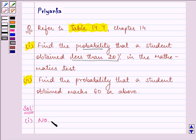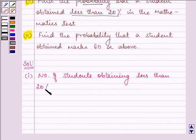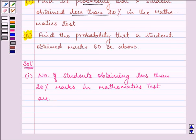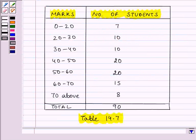The number of students obtaining less than 20% marks in the mathematics test - now 20% out of 100 means the marks range from 0 to 20.